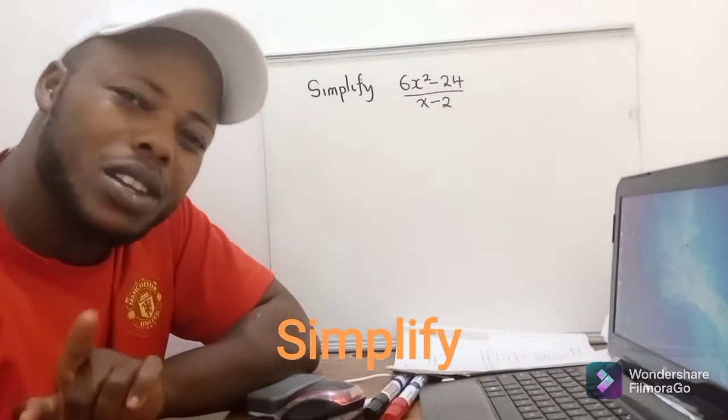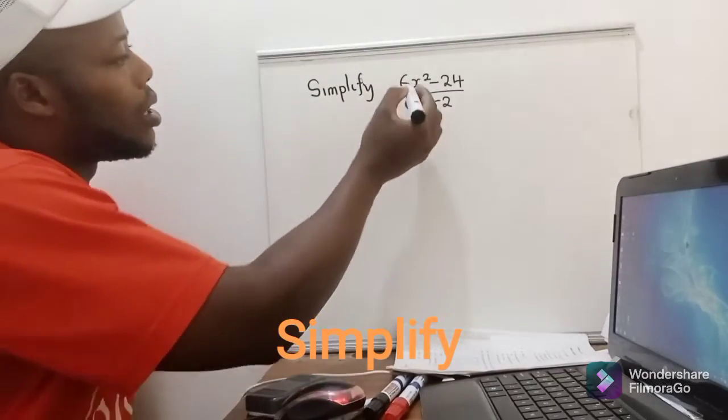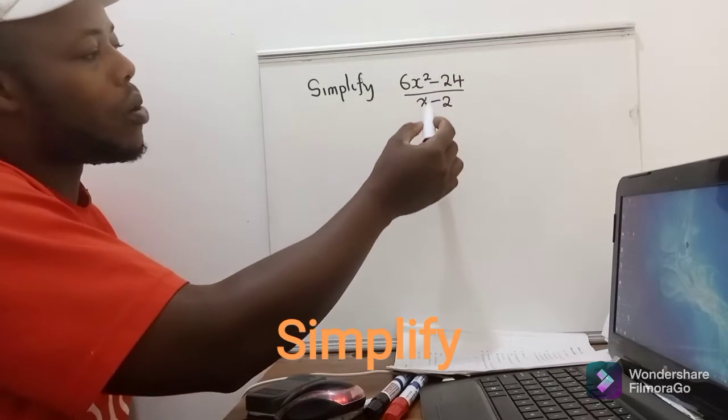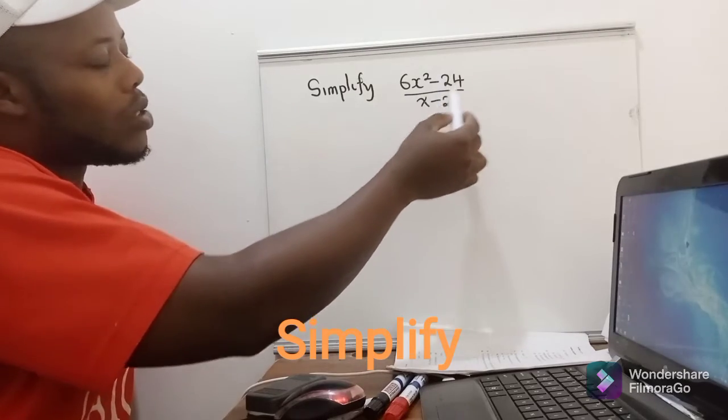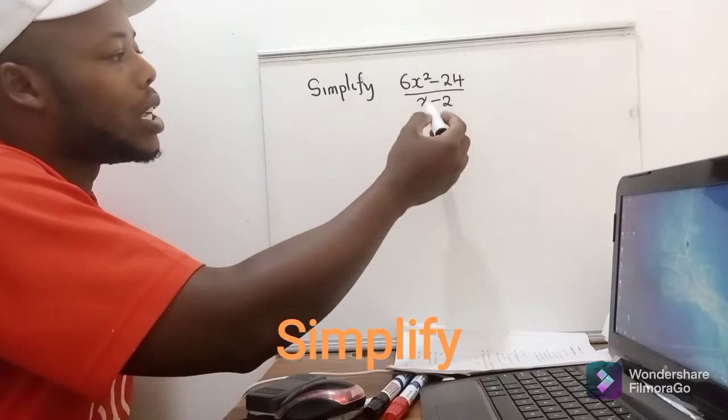This problem is from 2019, this is grade 12. What you need to do is try by all means to make at least one term here on the numerator look like what is on the denominator.